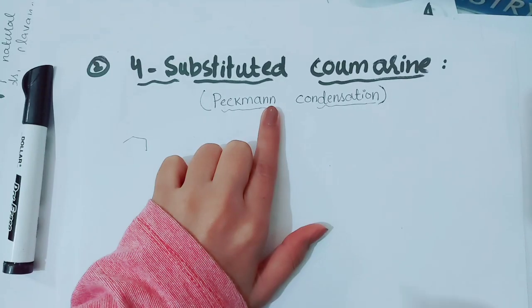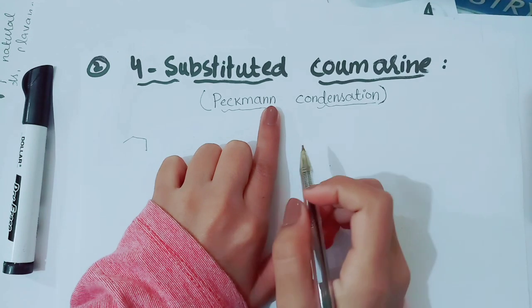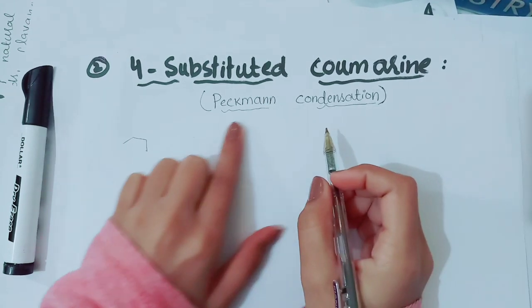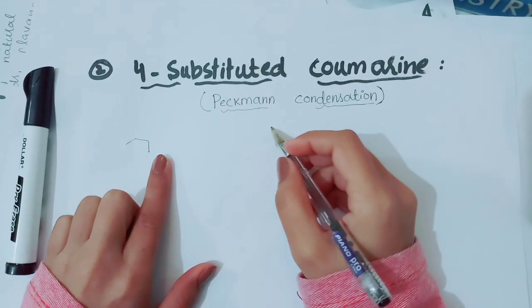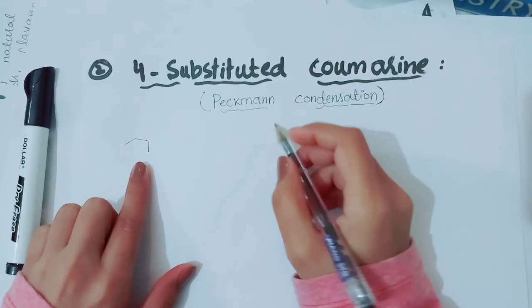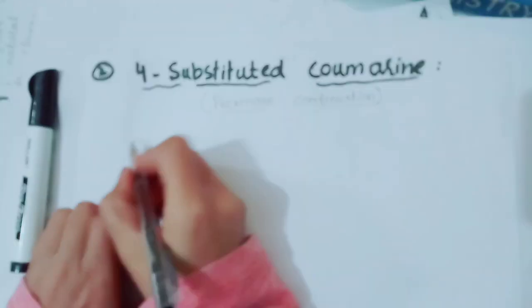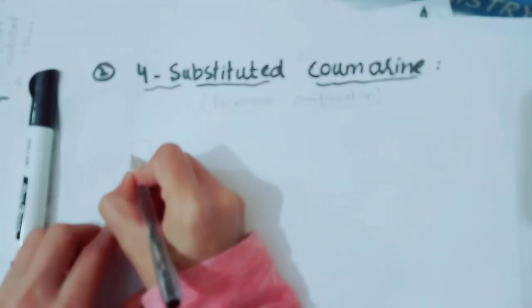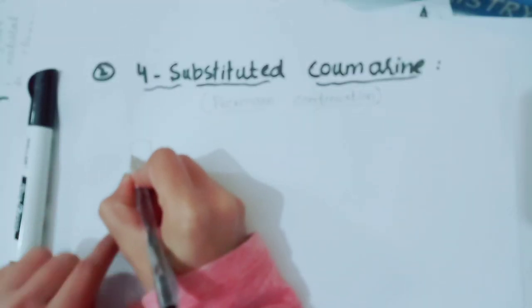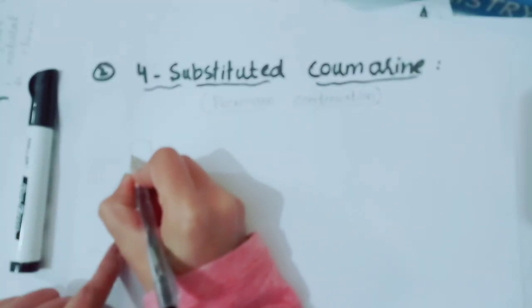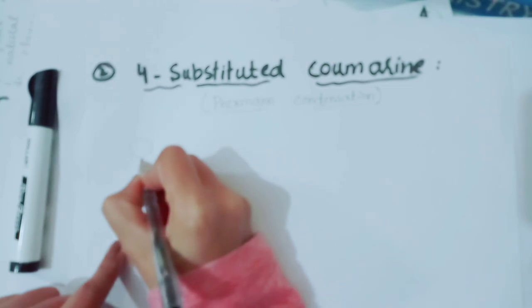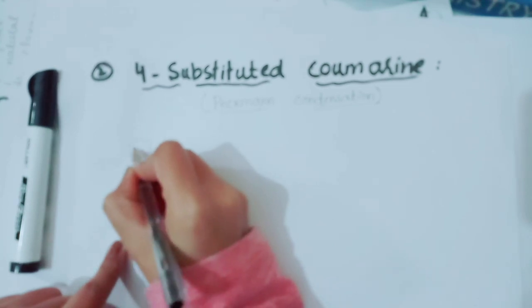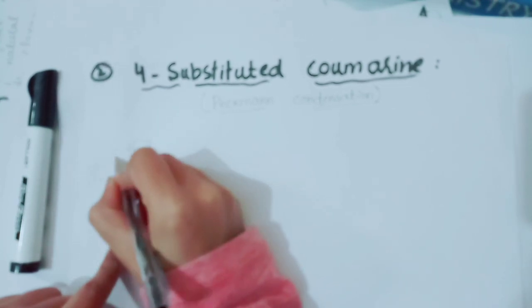This is 4-substituted coumarin, and Pechmann condensation will be used for its synthesis. In this reaction, substituted phenols with beta-keto esters are catalyzed by a Lewis acid. Let's get started with the mechanism.